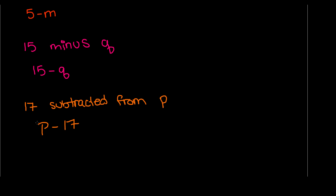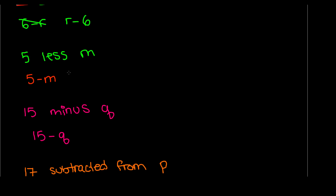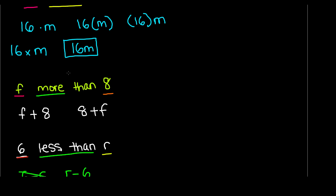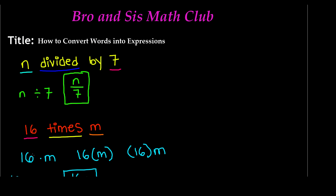That's all for this video. Converting words into expressions is not a very hard topic, as long as you underline, circle, or highlight your key terms. Remember, the key terms are just the components of an expression: variables, numbers, and operations. As long as you do that, it should be really easy to convert words into expressions. Thanks for watching and we'll see you guys next time. Bye!